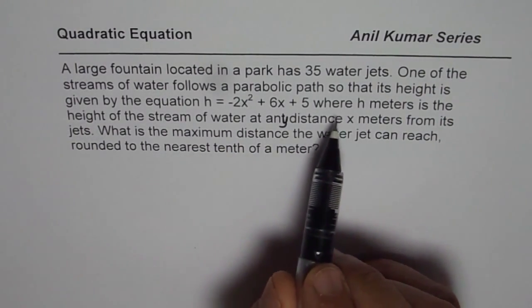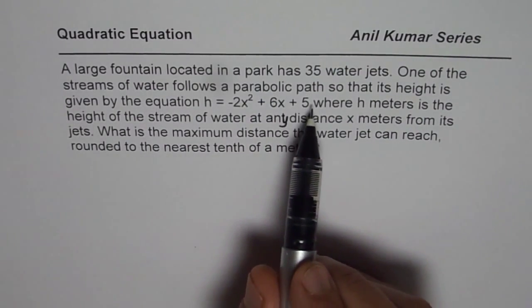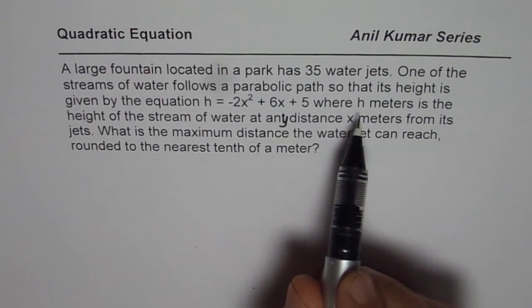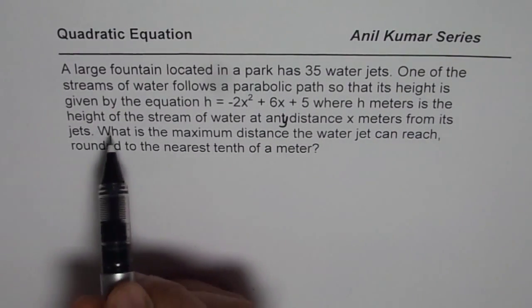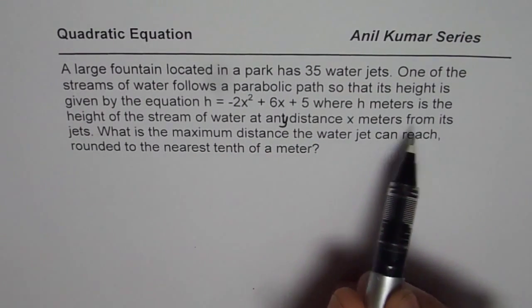The question here is, let us read that part. One of the streams of water follows a parabolic path so that its height is given by this equation, where h meters is the height of the stream of water at any distance x meters from its jet.